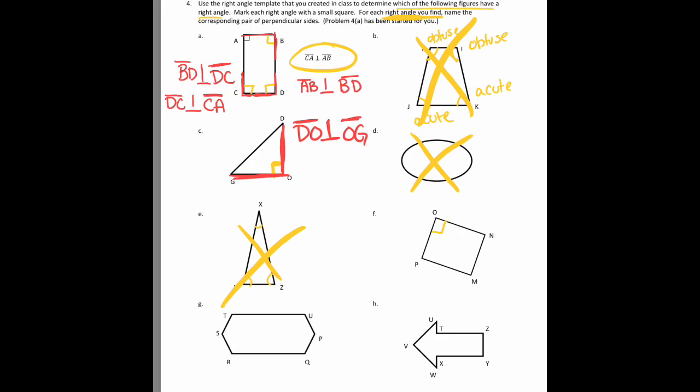And then if you look at F, we have four right angles again as this is a rectangle. So I'm going to name all pairs of perpendicular sides. So I'm going to say side PO is perpendicular to ON. I'm going to say that ON is perpendicular to NM. I'm going to say that NM is perpendicular to MP. And that MP is perpendicular to PO.